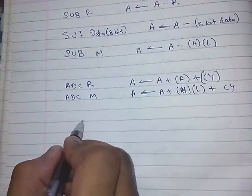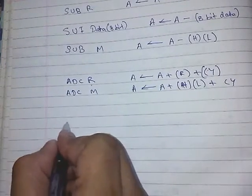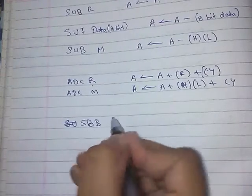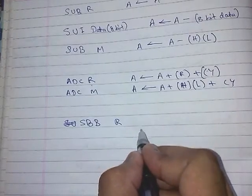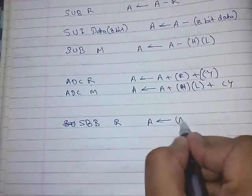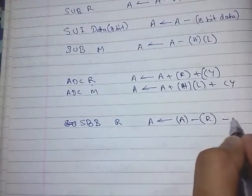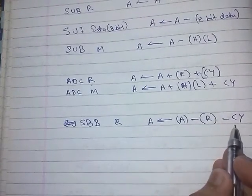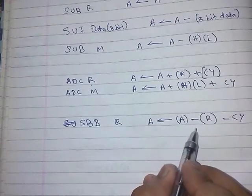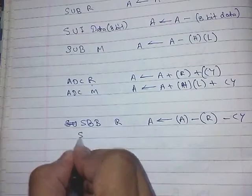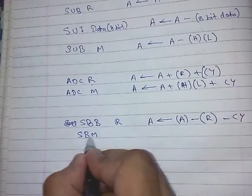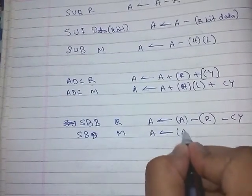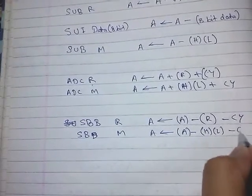Similarly, with subtraction we use borrow, not carry. SBB R will be: A = A - R - carry (borrow). For memory: SBB M, so A = A - [HL] - carry. Because in subtraction we are taking borrow, the carry flag is subtracted.